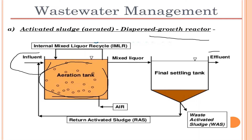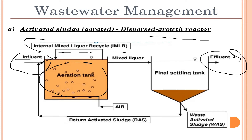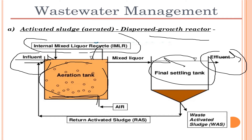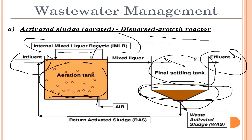In the dispersed growth reactor, the aeration tank receives the influent — the liquid brought into the system — while effluent is discharged out. There is an internal mixed liquid cycle. Air supply is introduced from the bottom of the aeration tank. The treated liquid is then transferred to the final settling tank where suspended solids are deposited at the bottom as sludge and are then processed.